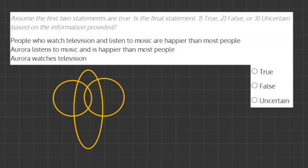In this question, we have two statements that are true, and we have to understand these statements and see if the final statement is true, false, or uncertain based on the information provided. A little trick here is when you look at these statements, they're usually all or nothing.